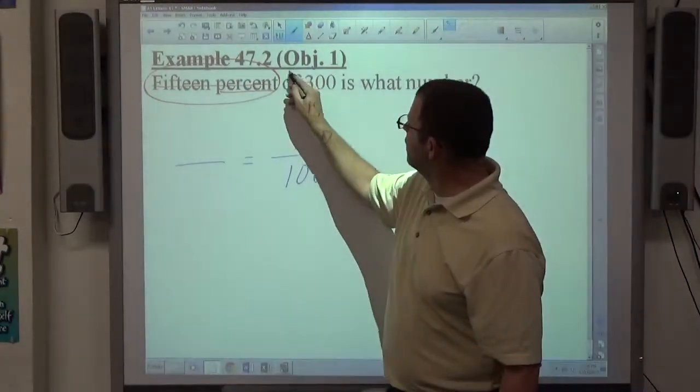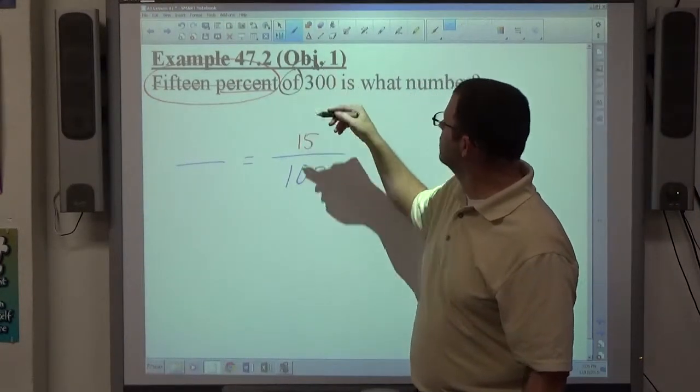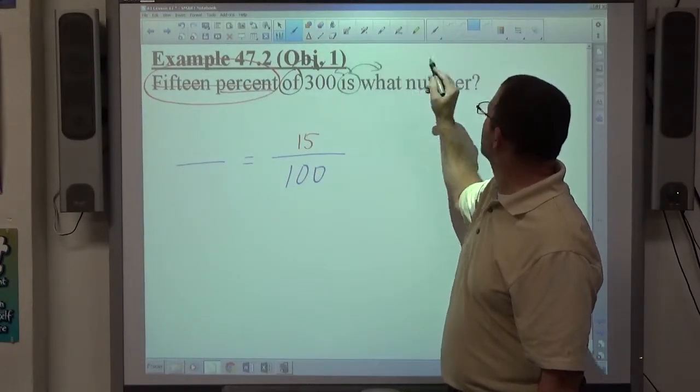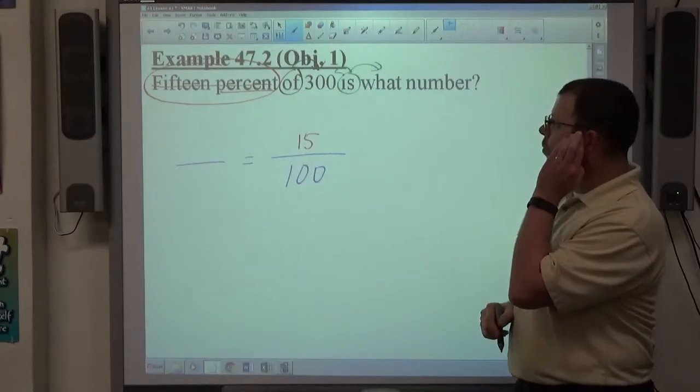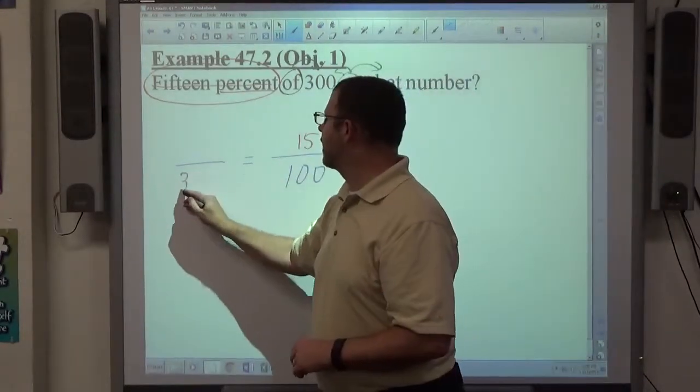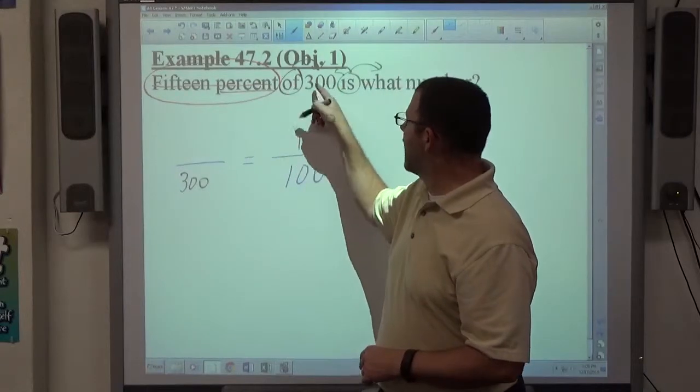Then again we have 'of', which is next to 300 only. And we have 'is' next to 300 and also what number. So where does 300 go? It's on the bottom. Because 300 is the only option for 'of', so it has to be the 'of' number.